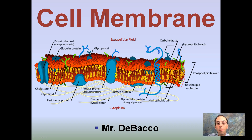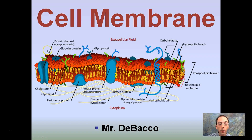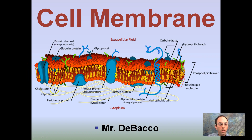Here we're going to look at cell membranes. This is an example of one — a lot going on here. Keep in mind the cytoplasm is on the inside of the cell and the extracellular fluid is on the outside. This is the membrane dividing the two, and you can see there's a lot going on here with our phospholipid bilayer and our protein channels. We're going to learn about these and hopefully explain what some of them are.